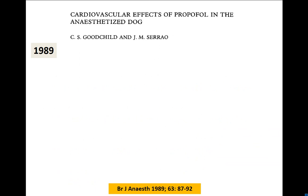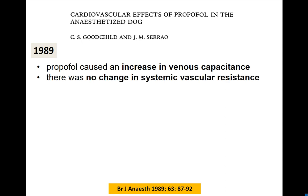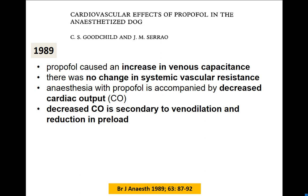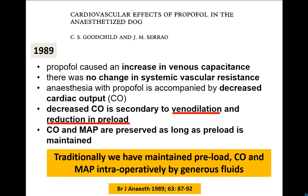We can go back to 1989, roughly the date of that anaesthetic machine picture I showed earlier, to work by Colin Goodchild at Leeds with Dr. Sereo. He found that propofol caused an increase in venous capacitance. There was no change in SVR; it was accompanied by decreased cardiac output, due to venodilation. That increase in venous capacitance reduced venous return, causing a reduction in preload which reduced cardiac output. He found that if you topped the dogs up to maintain capacitance, looking mainly at CVP, you could maintain cardiac output. Traditionally we've done that — maintained preload, cardiac output, and mean arterial pressure by generous fluids to compensate.